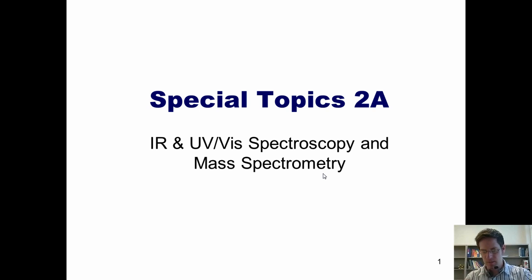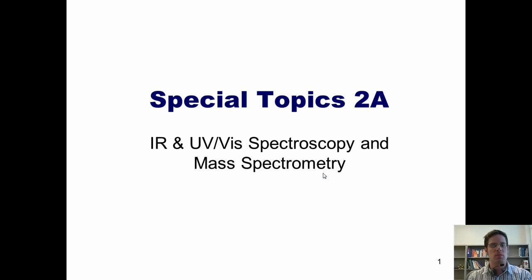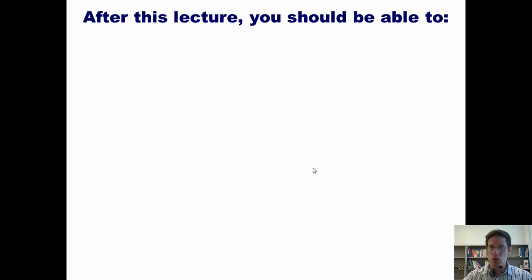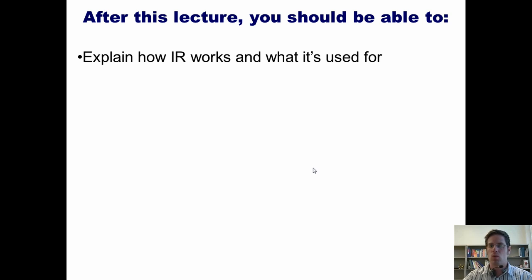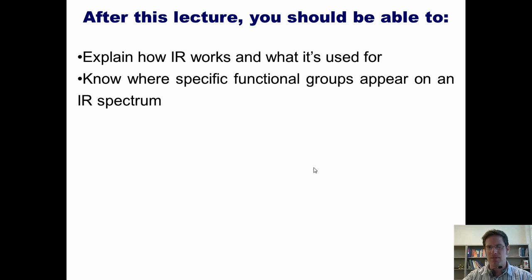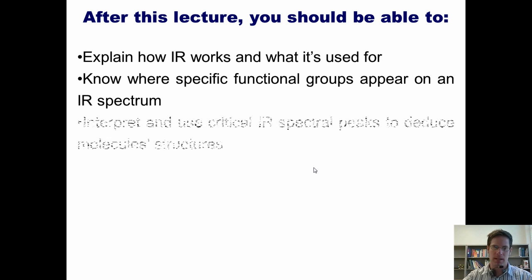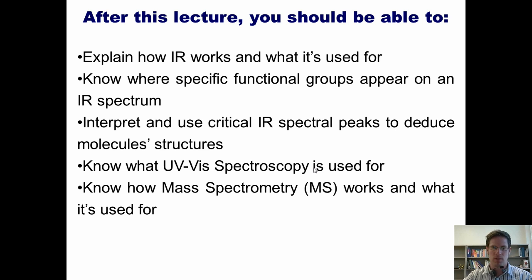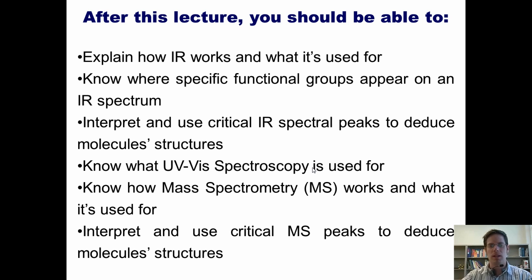So here we are on my second Special Topics lecture designed to help students prepare for standardized exams. Today we'll be talking about IR and UV-Vis spectroscopy and mass spectrometry. After this lecture, you should be able to explain how IR works and what it's for, know where specific functional groups appear on an IR spectrum, interpret and use critical IR spectral peaks to deduce molecule structures, know what UV-Vis spectroscopy is used for, know how mass spec works, and be able to interpret and use critical MS peaks to deduce molecule structures.